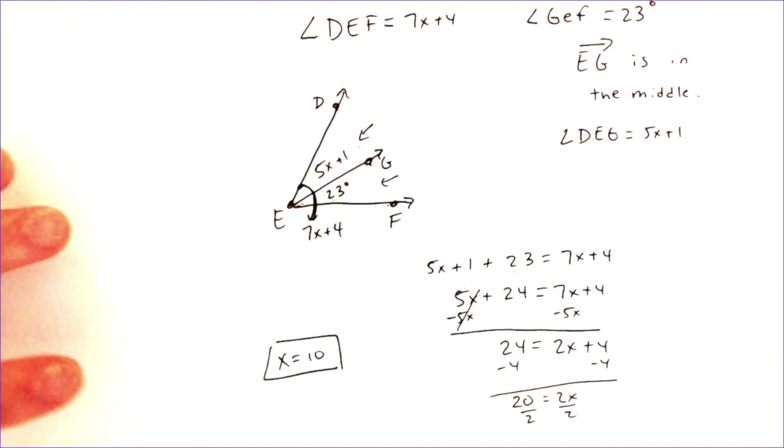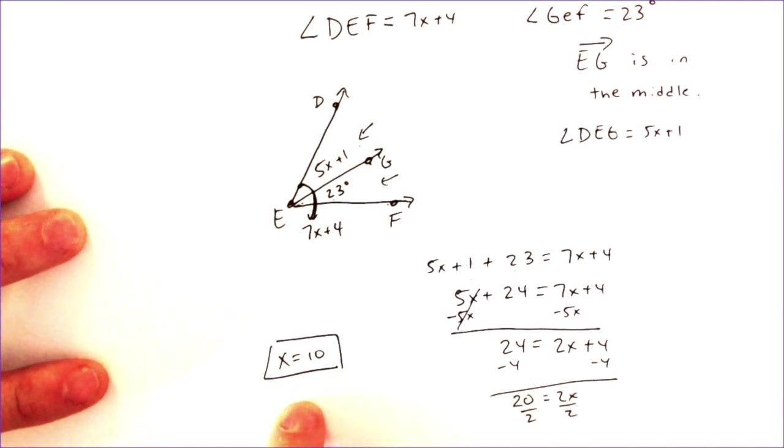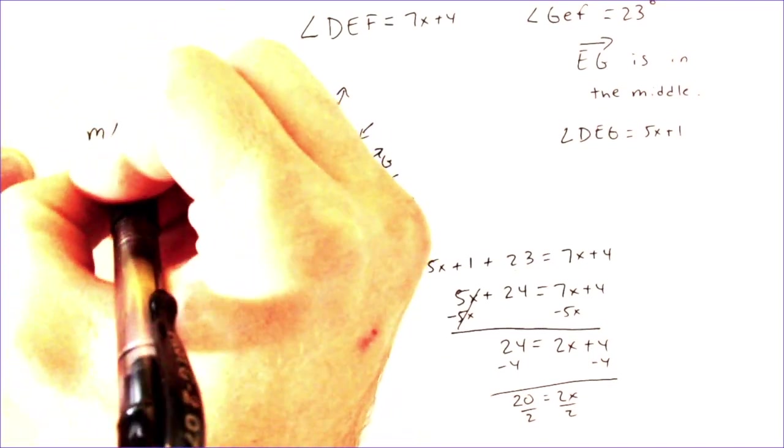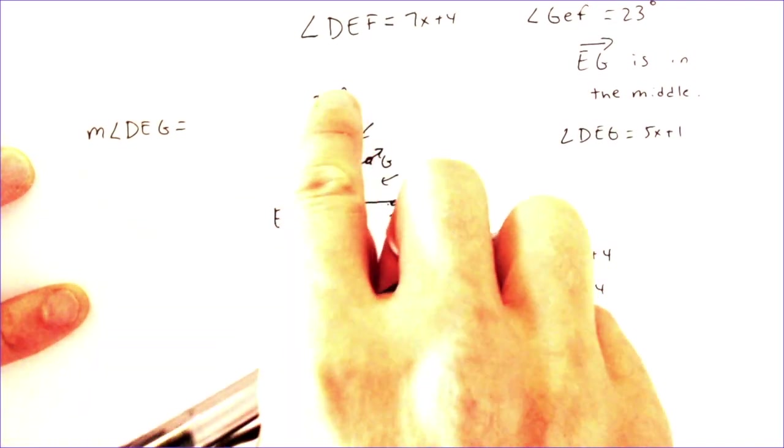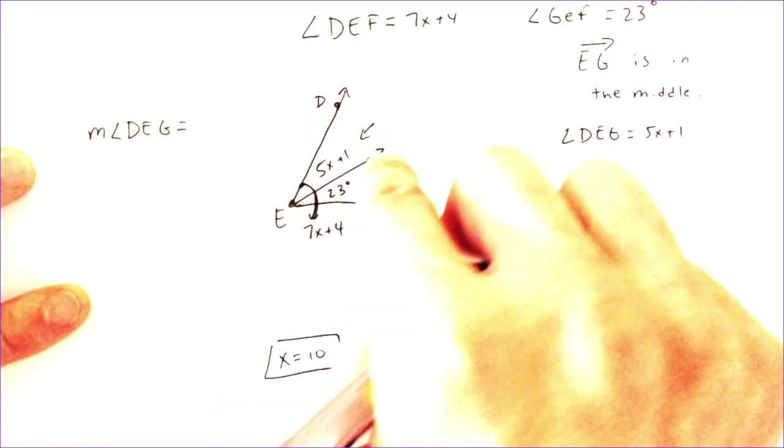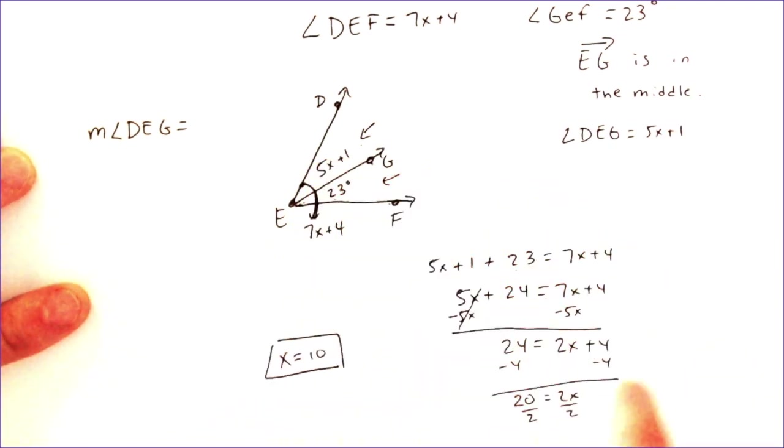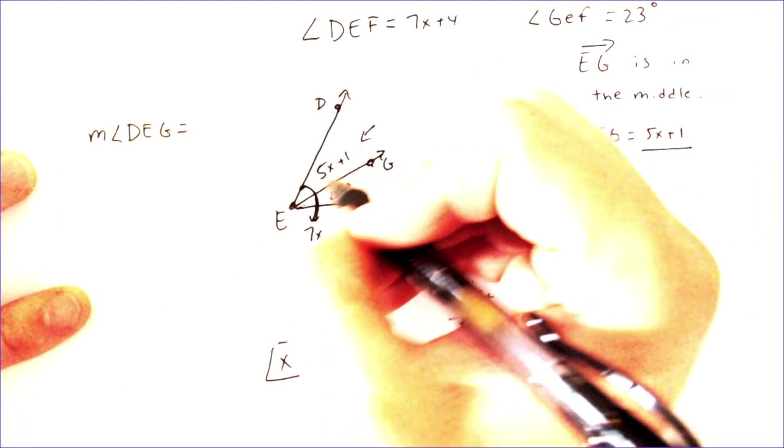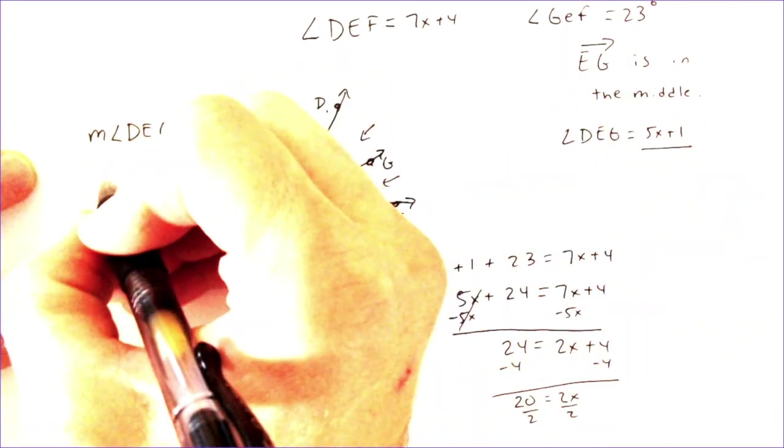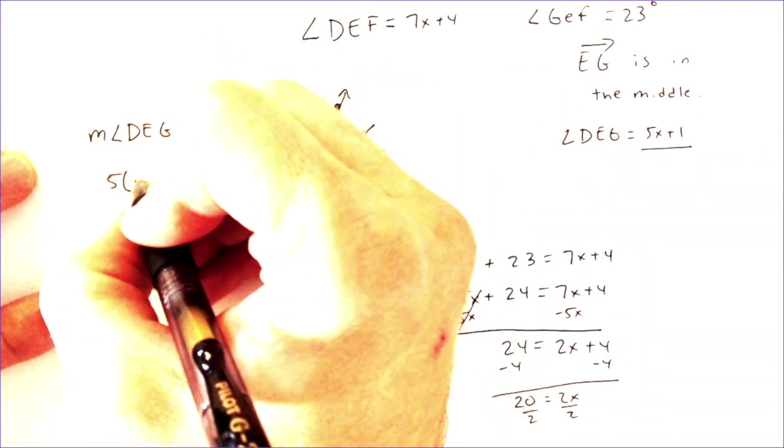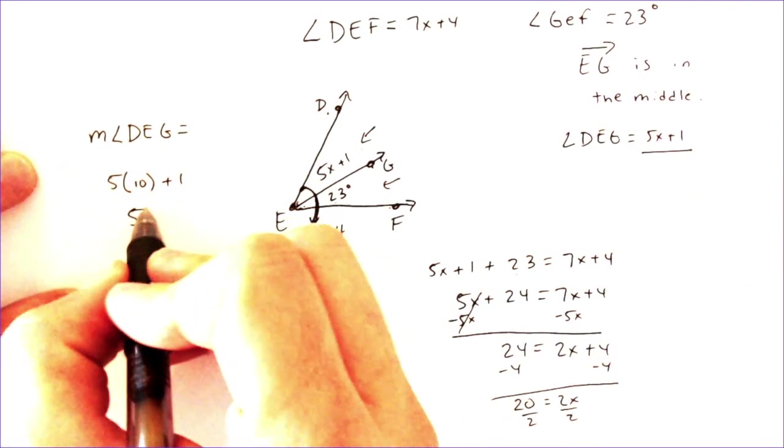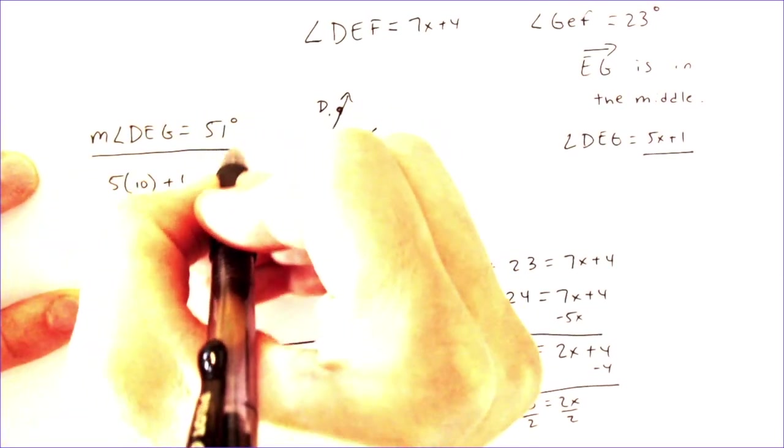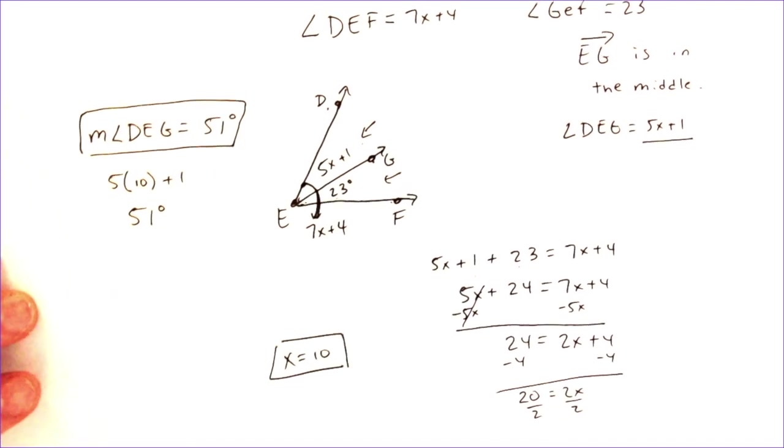Now, I didn't say what we were supposed to do here, so I could have said, find x. We have found it. But we could also be asked to find other things. For instance, what is the measure of DEG? I don't know. But if I find x, I can figure out the measure of DEG, which is here, the little part. 5x plus 1. So I can plug in the 10 to find the measure of DEG. So if I plug in 10 into the 5x plus 1, then we could get the measure of DEG. So we would do 5 times 10 plus 1. 5 times 10 is 50 plus 1 is 51 degrees. So be careful of your instructions. Sometimes it's just find x. Sometimes you have to plug that value for x back in.